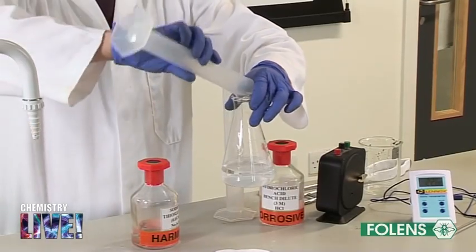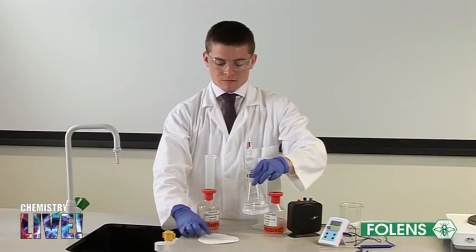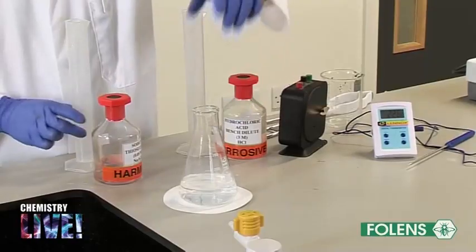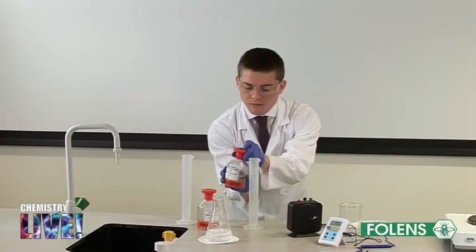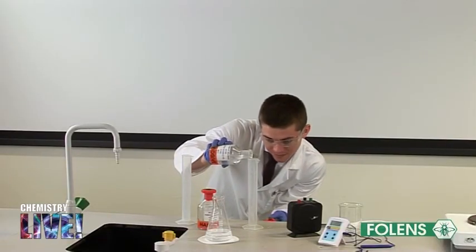Place the conical flask on a sheet of white paper on which a mark has been made. Pour 10 centimeters cubed of the hydrochloric acid solution into the conical flask.